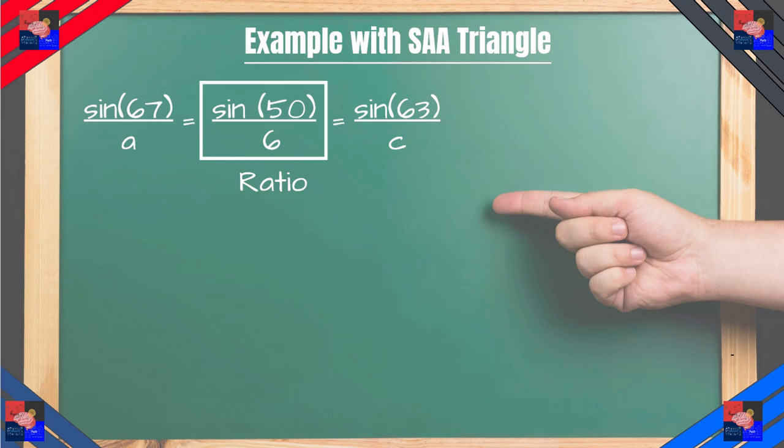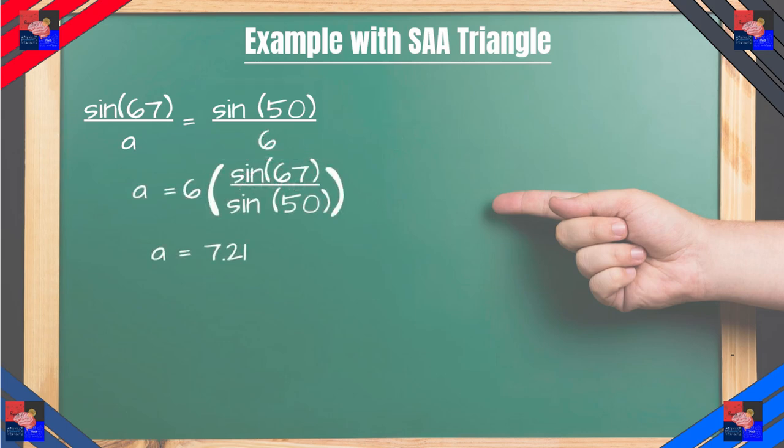Now if you've been practicing math a lot you'll be able to see that sine of 50 degrees over 6 can be used as a ratio to solve for the rest. So sine of 50 degrees over 6 is equal to sine of 67 degrees over A. Here we cross multiply, solve for A.